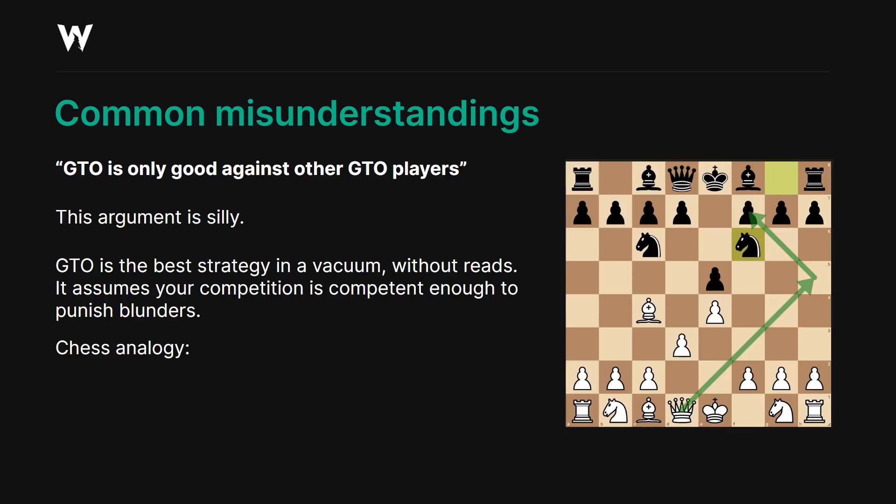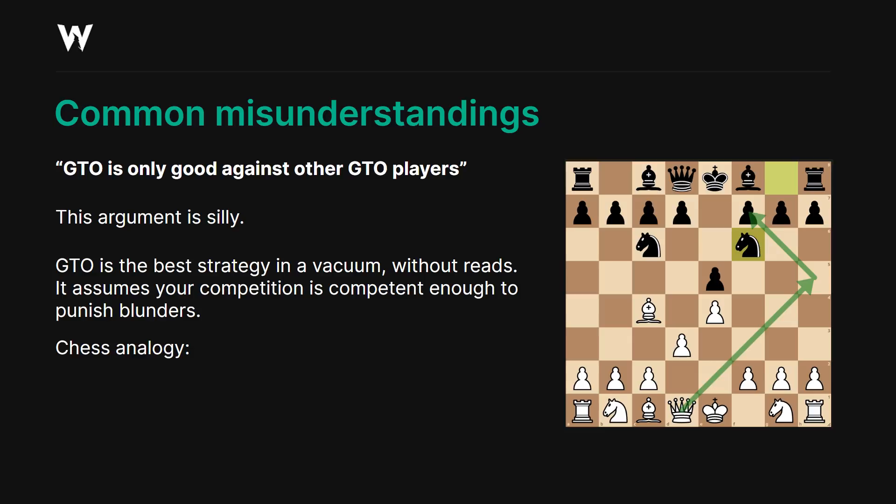Some common misunderstandings: some people will say GTO is only good against other GTO players — this argument is just silly. GTO is the best strategy in a vacuum without reads. It assumes your competition is competent enough to punish blunders. As a funny analogy, if you're playing an exploitative style in chess, you might move your queen to h5 and plan to take the pawn on f7 and checkmate the king supported by the bishop. But a GTO player will say no, this strategy is exploitable because the knight can simply take the queen. GTO also prevents you from making massive blunders.